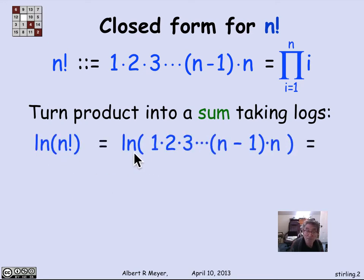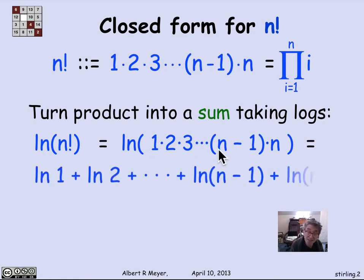So log of n factorial is the product of 1 through n. But a log of a product is the sum of the logs. So it's simply log of 1 plus log of 2 up through log of n. And expressed in sum notation, it's the sum from i equals 1 to n of log of i.